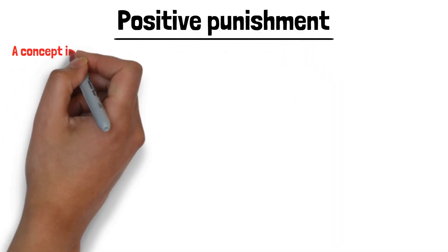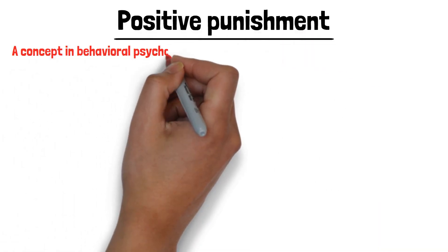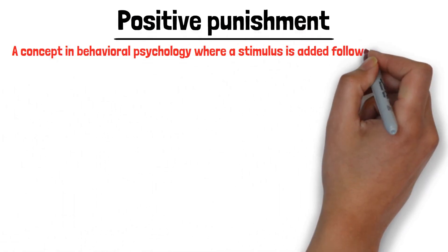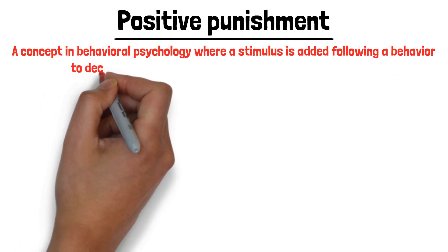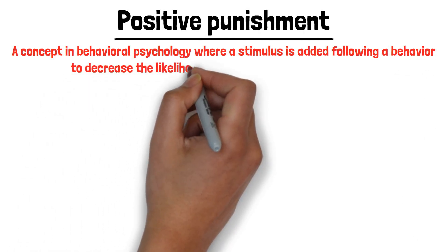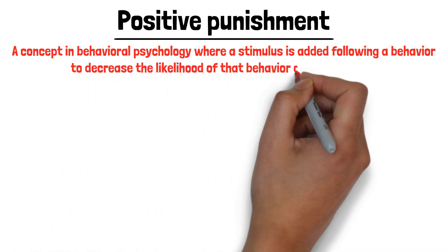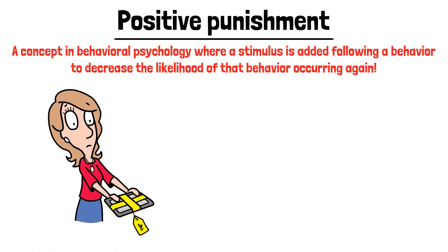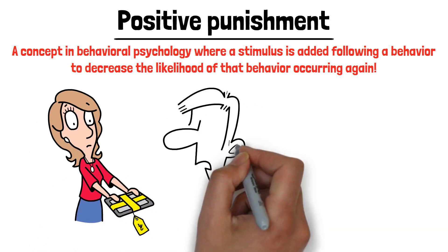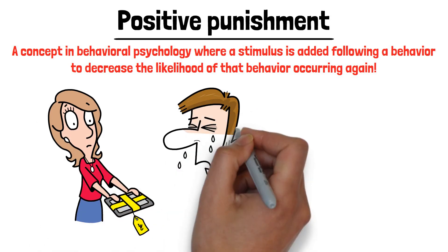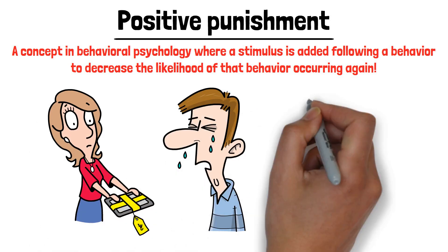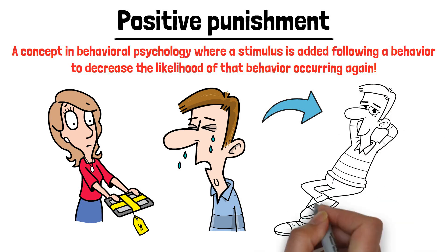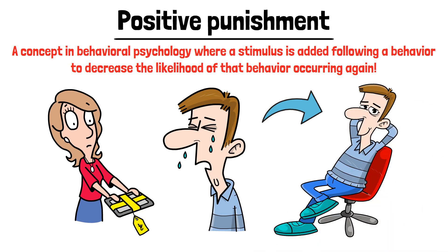Positive punishment is a concept in behavioral psychology where a stimulus is added following a behavior to decrease the likelihood of that behavior occurring again. It involves presenting an unfavorable outcome or event after an undesired behavior is exhibited, making the behavior less likely to happen in the future.